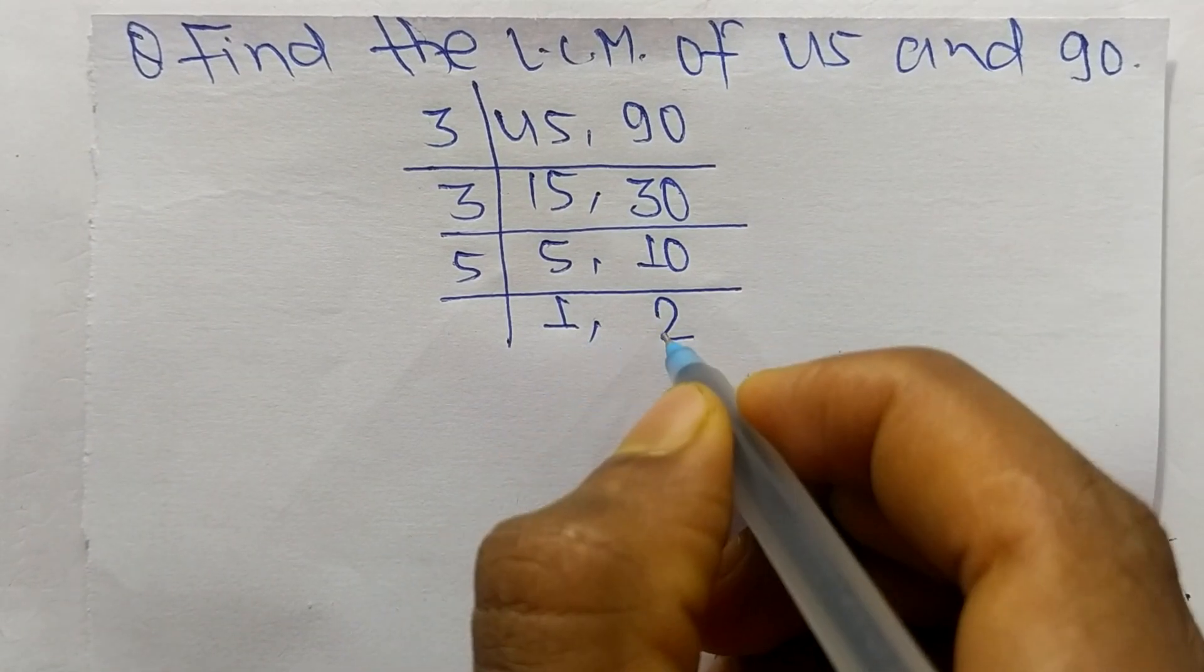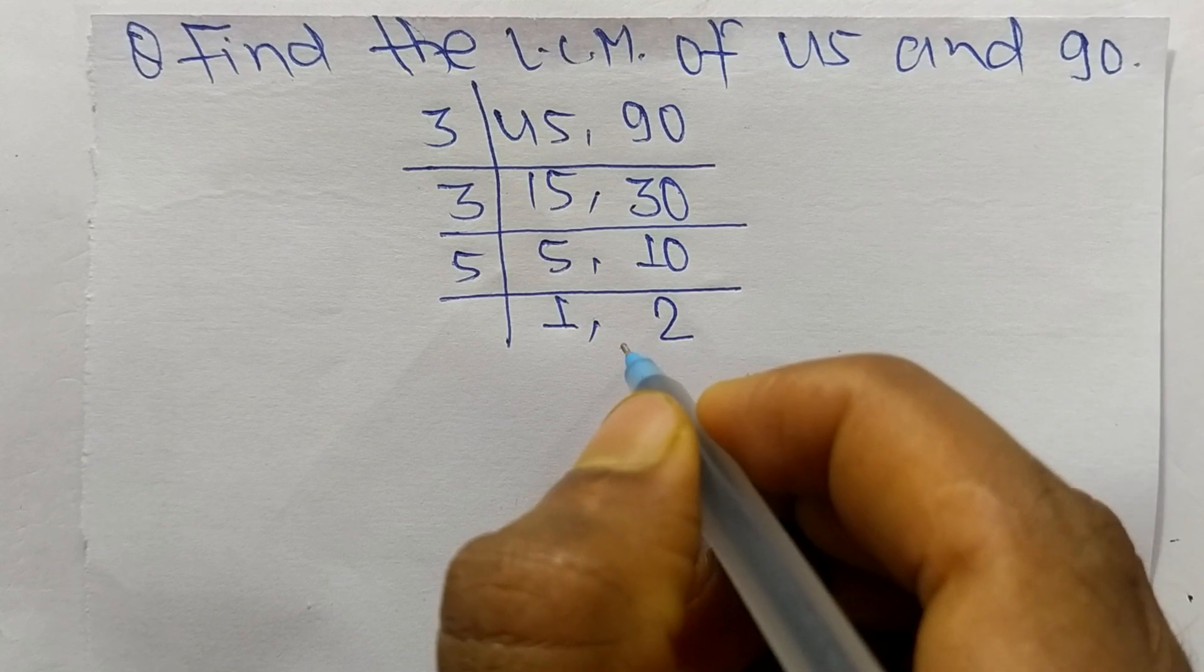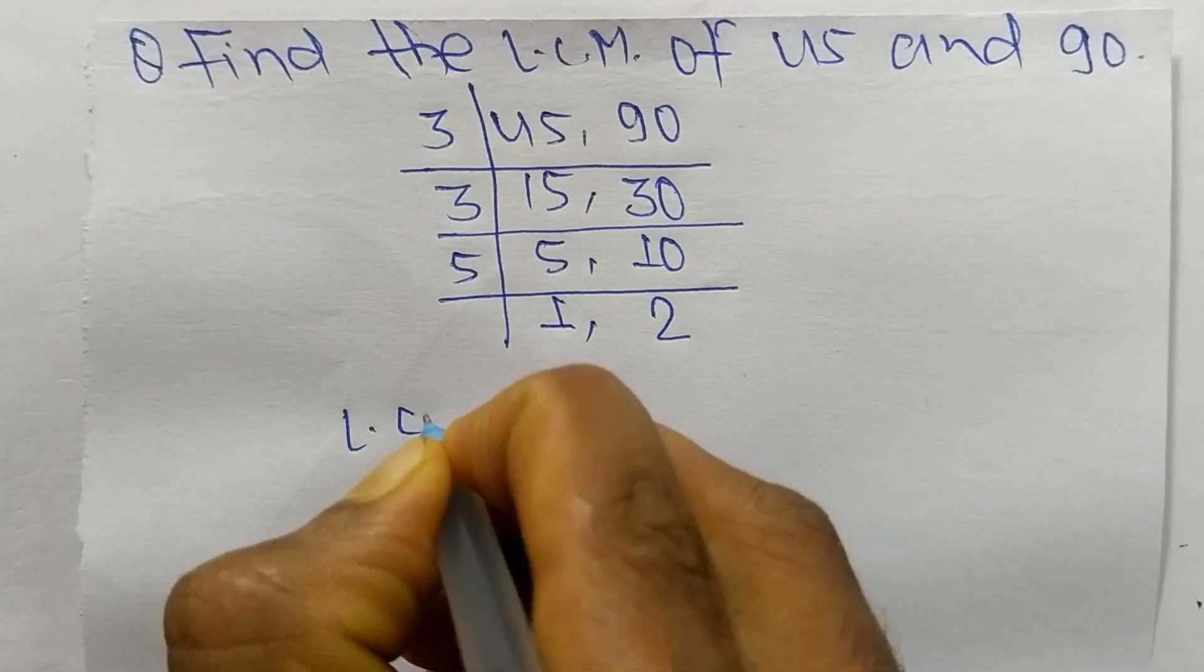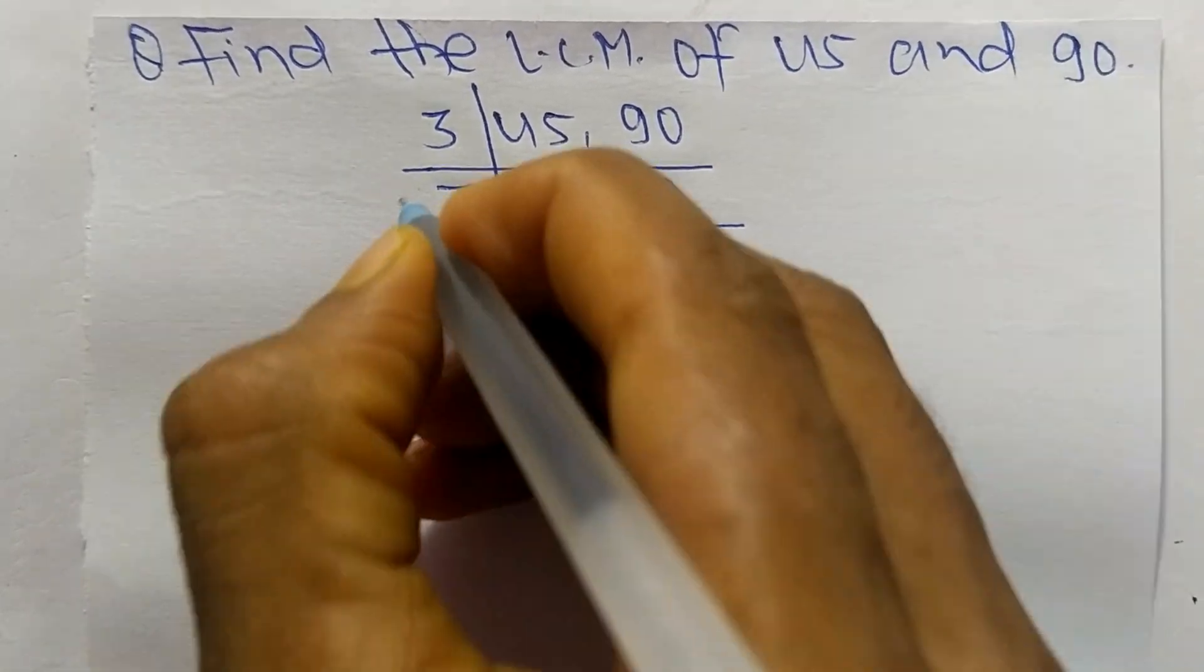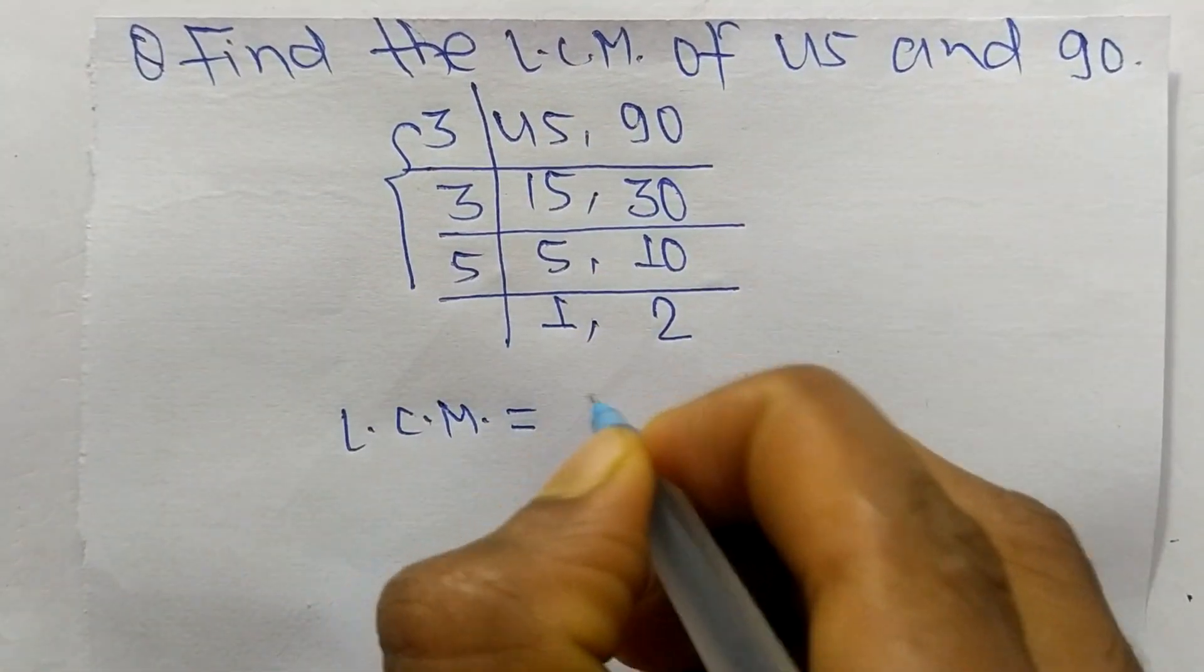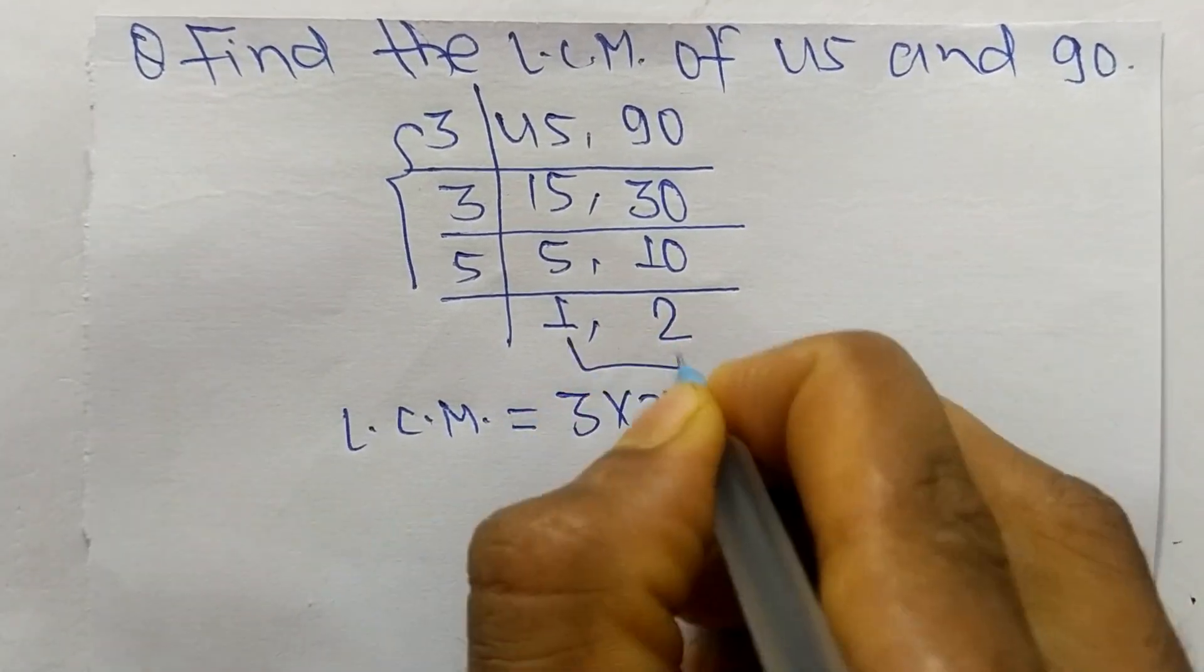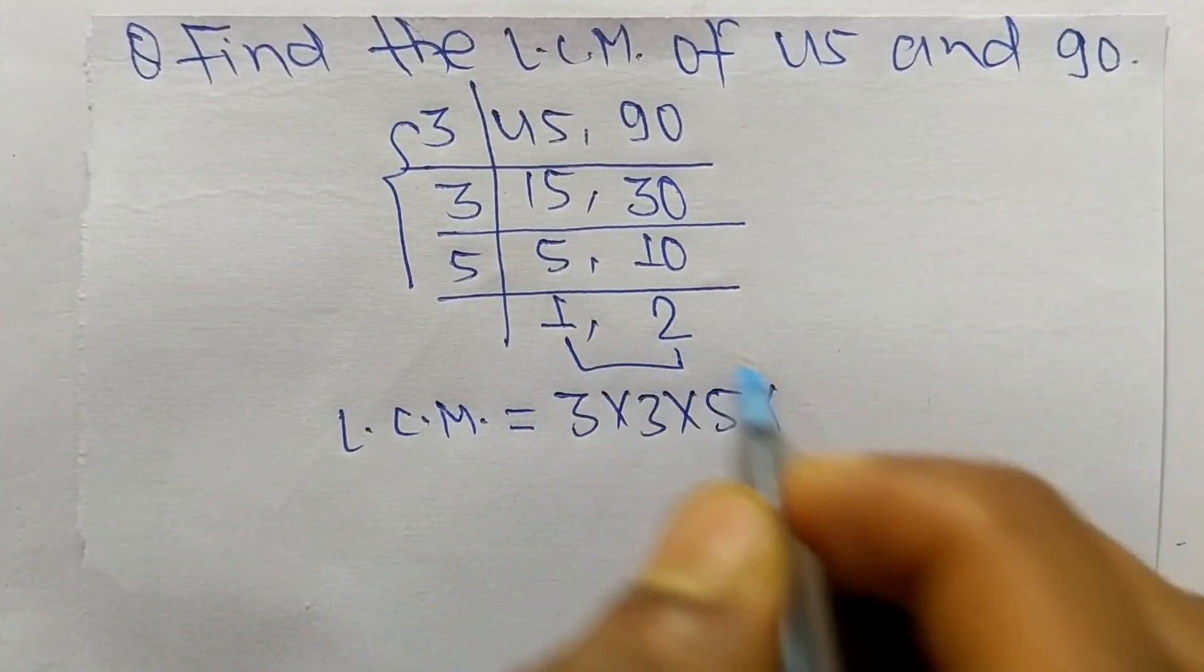At last we have 1 and 2, which are not exactly divisible by the same number. So the LCM is equal to, from this part, 3 times 3 times 5, and from this part we have 1 and 2.